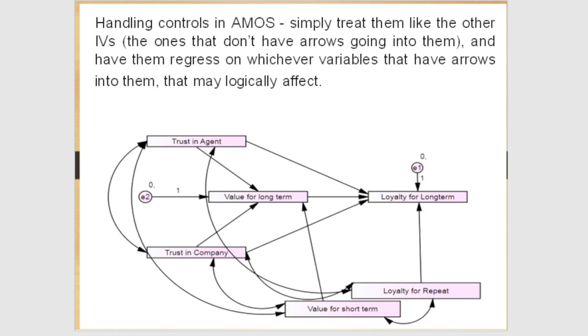Now we'll be moving on to handling controls in AMOS. Simply treat them like the other independent variables and have them regress on whichever variables that have arrows into them that may logically affect.